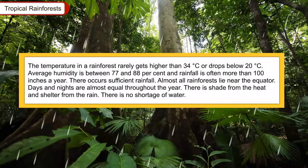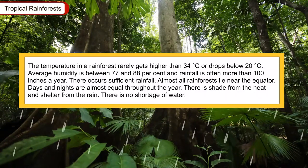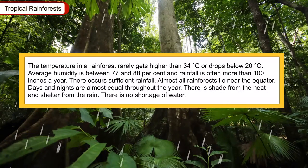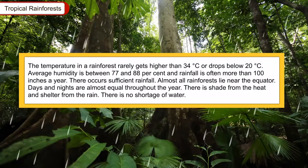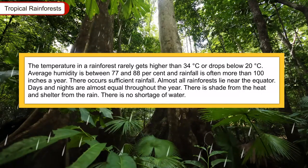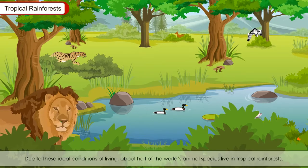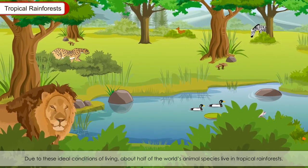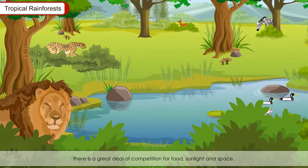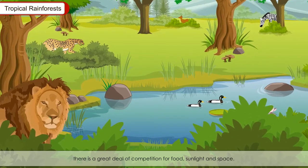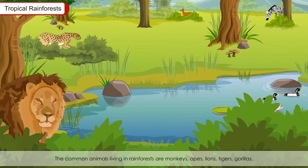Tropical Rainforests: The temperature in a rainforest rarely gets higher than 34 degrees Celsius or drops below 20 degrees Celsius. Average humidity is between 77 and 88 percent and rainfall is often more than 100 inches a year. Almost all rainforests lie near the equator. Days and nights are almost equal throughout the year. There is shade from the heat, shelter from the rain, and no shortage of water. Due to these ideal living conditions, about half of the world's animal species live in tropical rainforests. Because there are so many animals, there is a great deal of competition for food, sunlight and space, so animals have developed special features to survive — this is called adaptation.